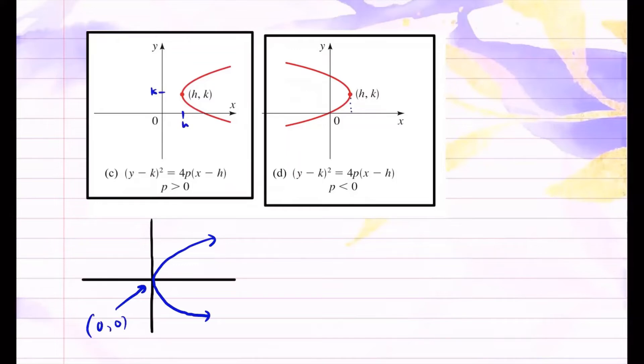And now we're shifting it h units to the right and k units up. Same thing right here, it just opens toward the left, but your vertex is still h comma k. So now we want to know how to find the focus and the directrix. Remember that if the parabola opens to the right, your p is positive, and if the parabola opens to the left, your p is negative.